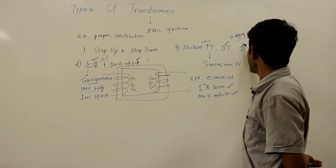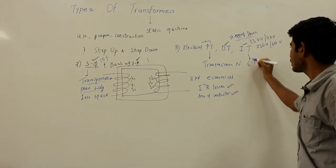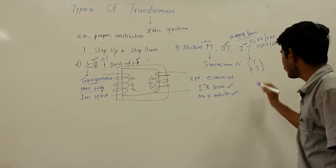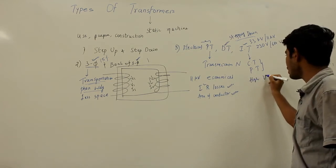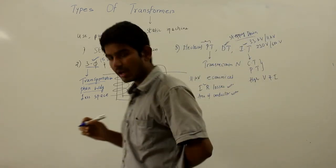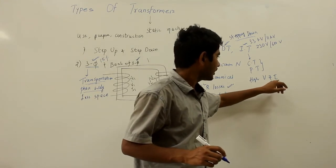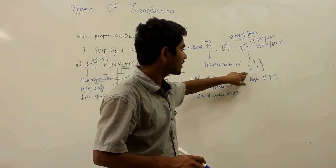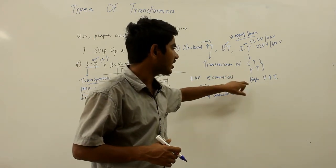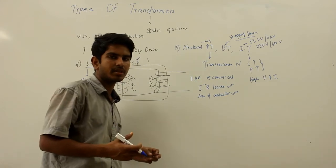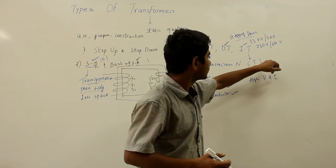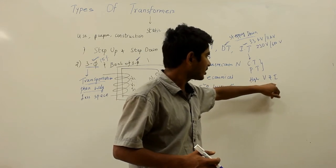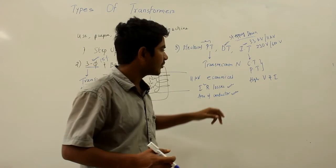Instrument transformers include the current transformer (CT) and the potential or voltage transformer (PT). They are used for stepping down high voltage and current values to a lower level so they can be measured by conventional measuring instruments, since normal instruments cannot handle the high voltages and currents present in a power system network.